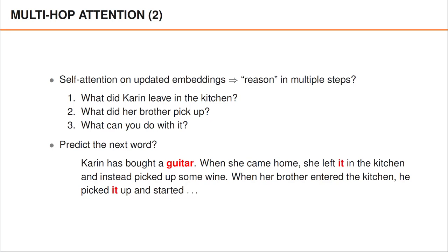Humans understand that the brother probably picked up the new guitar and that 'playing' may be a reasonable guess for the next word. However, to realize this, we arguably reason about the text in multiple steps. First, we realize that the word 'it' in the second sentence refers to the guitar, which means that she left the guitar in the kitchen. Second, we also understand that the word 'it' in the third sentence probably also refers to the guitar since he has entered the kitchen. Finally, we can use this information to guess what we might do with the guitar.